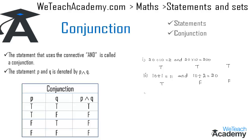In our next example, the statement is: '10 + 15 = 20 and 15 − 10 = 5.' The first statement is false, as we know 10 + 15 = 25, and the second statement is true. So the conjunction of both statements would also be false.